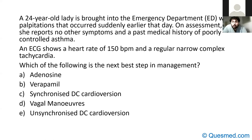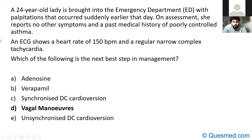About three-quarters of you wanted to do vagal manoeuvres, some wanted DC cardioversion, some verapamil. This patient has poorly controlled asthma, which may explain why she went into this rhythm. She has a regular narrow complex tachycardia — that should steer you away from VT or bundle branch block. So we're thinking this is a supraventricular tachycardia.